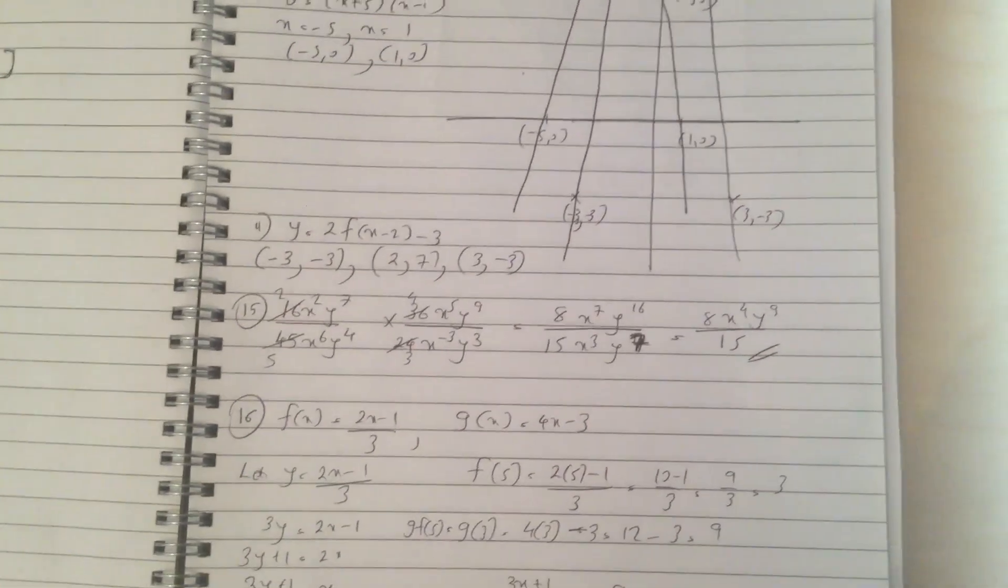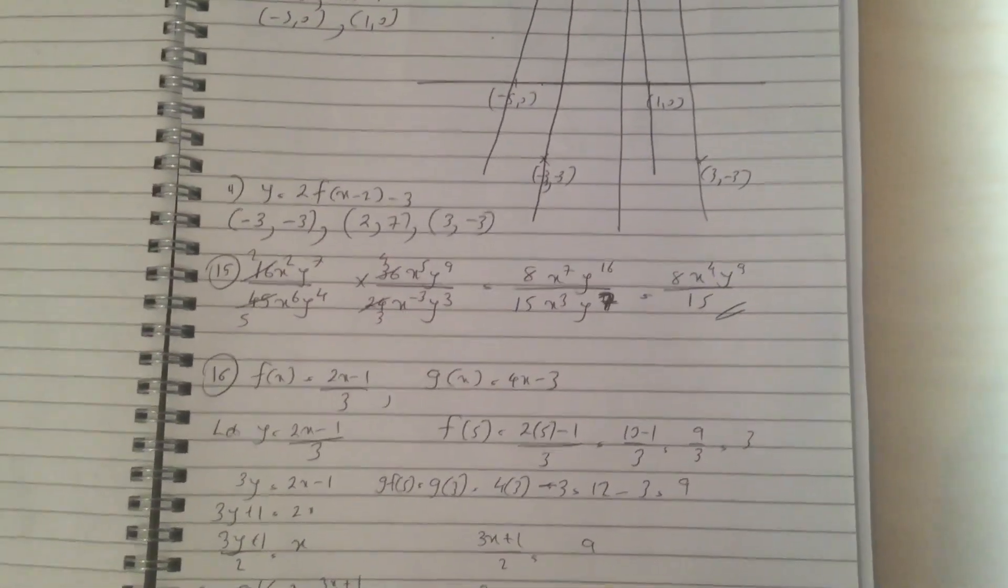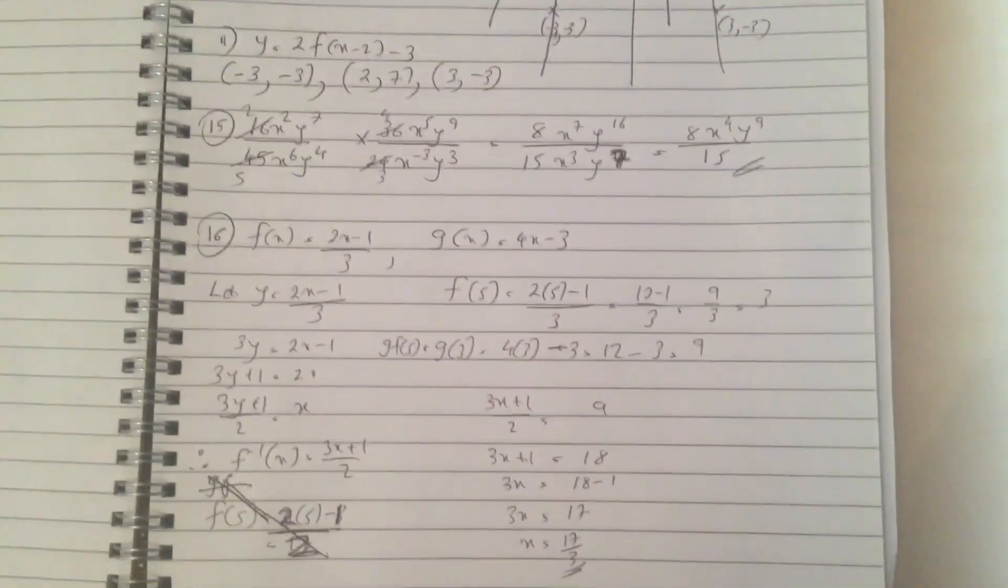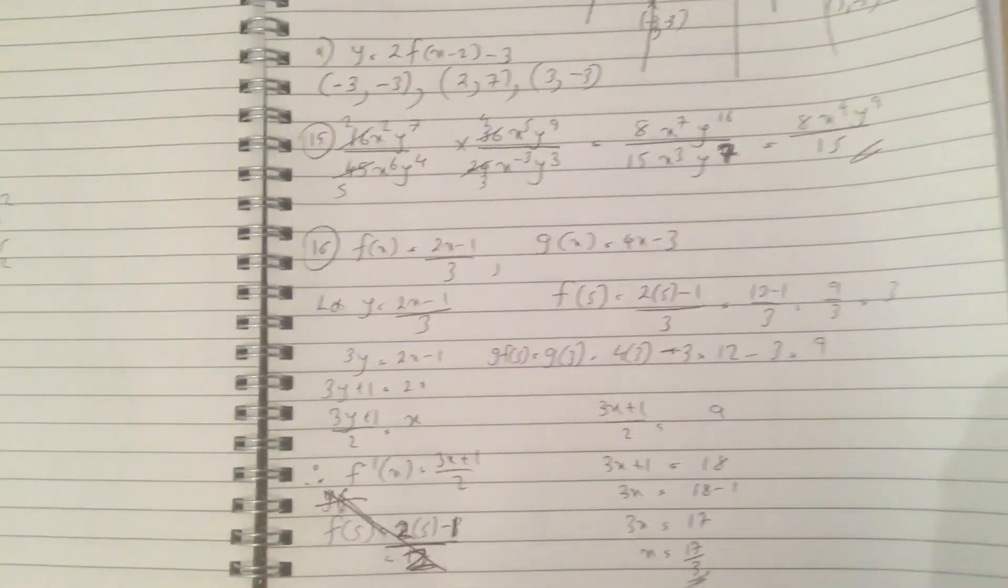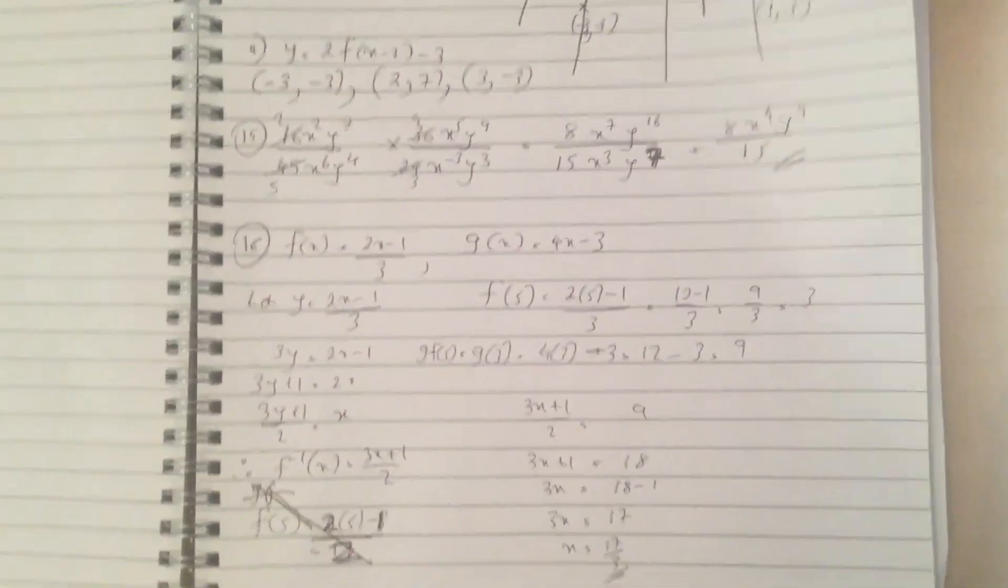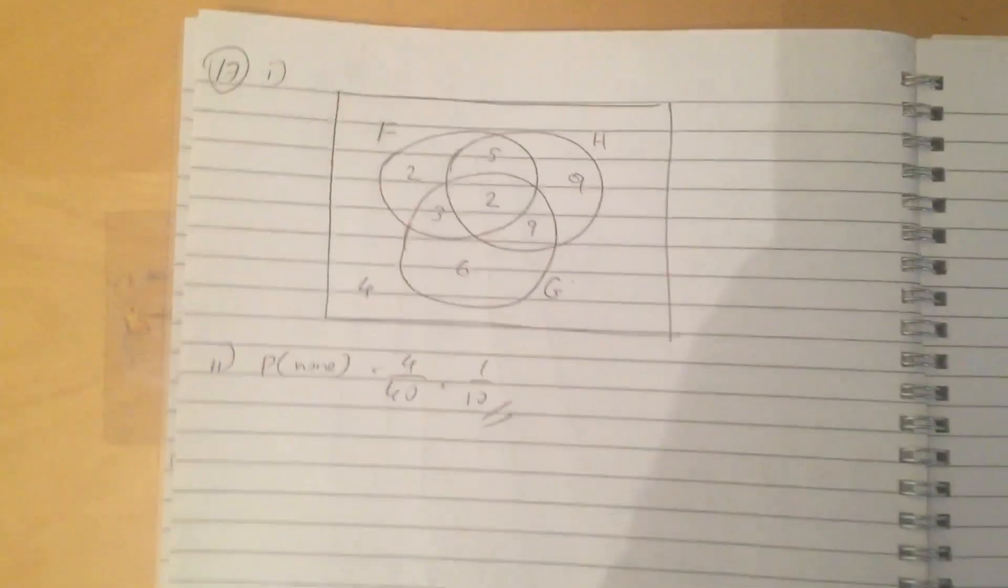Question 15, you just simplify and cancel. Question 16 is a functions question. And then question 17 is a Venn diagram question.